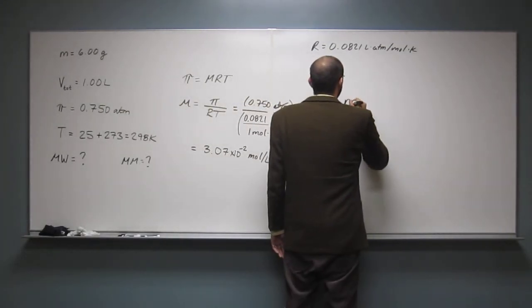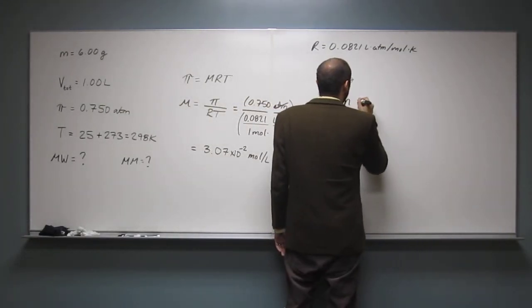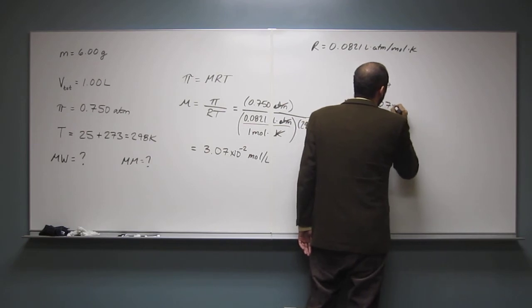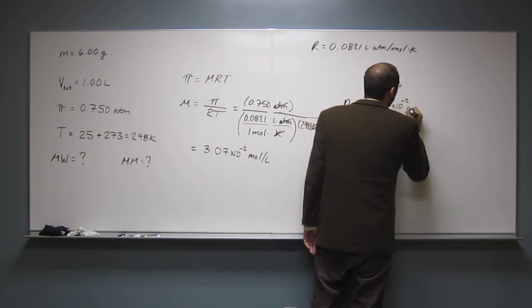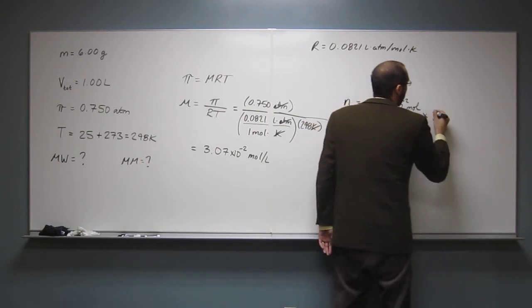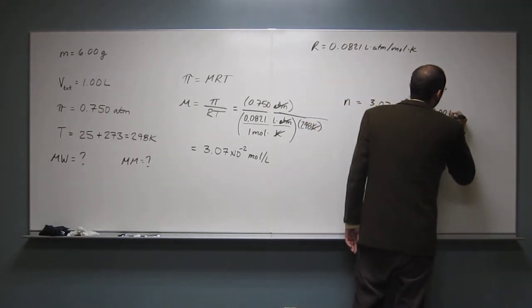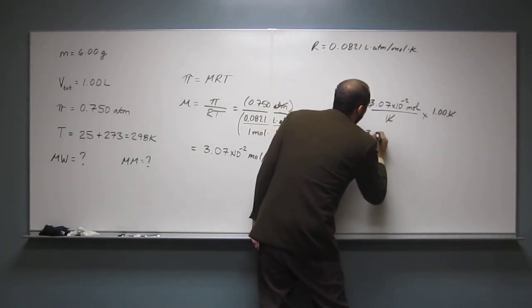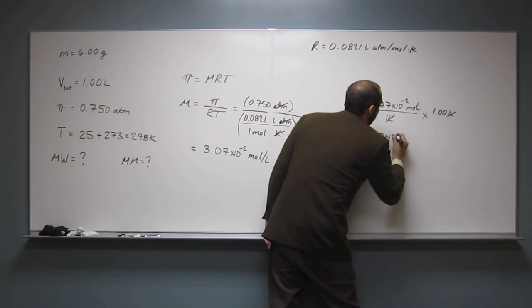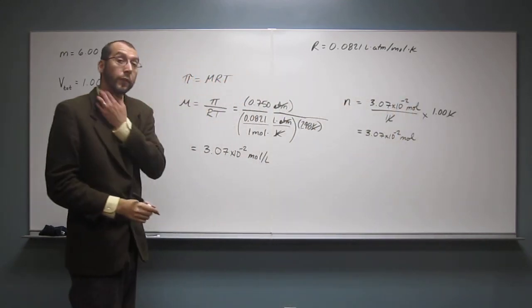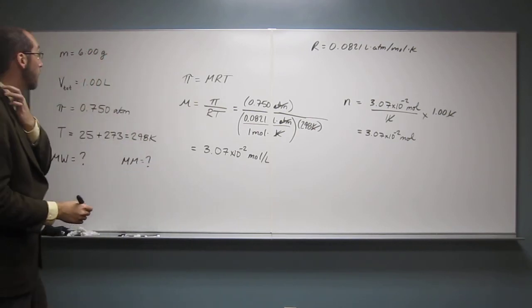Okay, so the number of moles is going to equal, so it's one liter. So it's just going to be 3.07 times 10 to the negative 2 moles for every one liter. And well, we've got 1.00 liters of it. So the number of moles of the solute is 3.07 times 10 to the negative 2 moles. Is everybody fine with that? Yes.